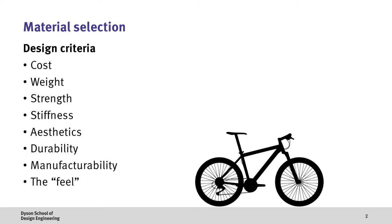When designing a bike we might first think about the design criteria or what people care about. This can include things like cost, weight, strength, stiffness, aesthetics, durability, manufacturability and more abstract factors such as the feel of the bike.